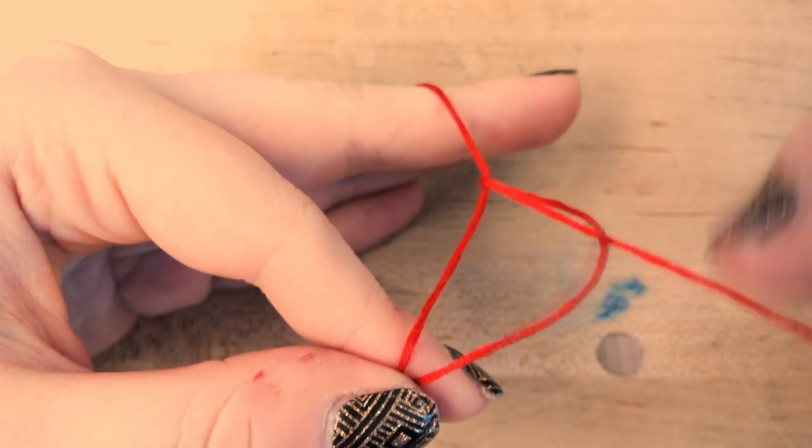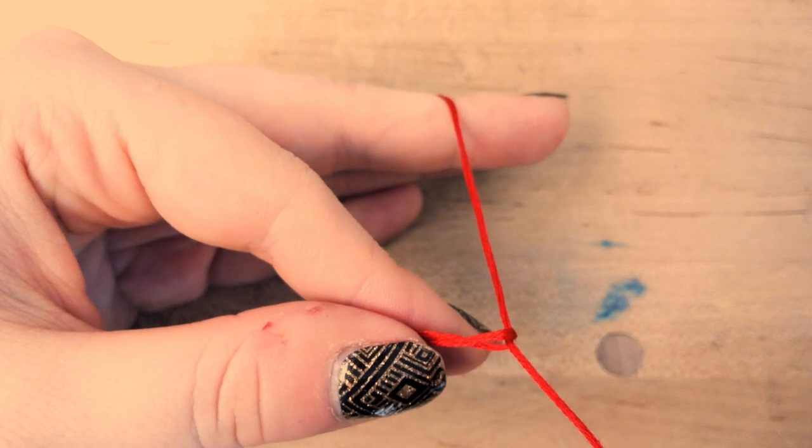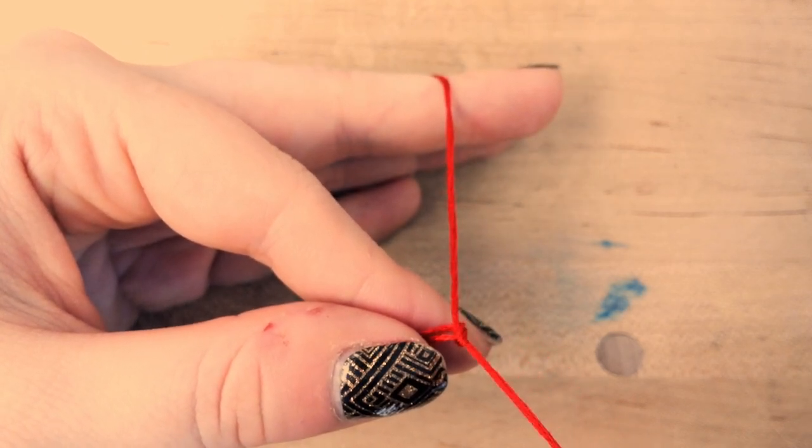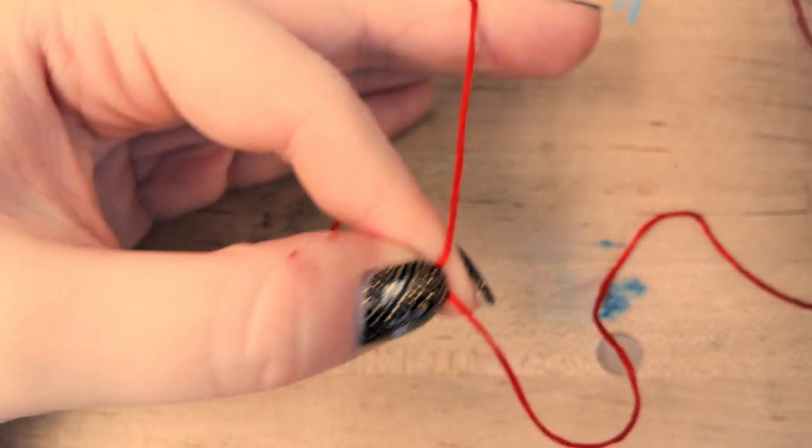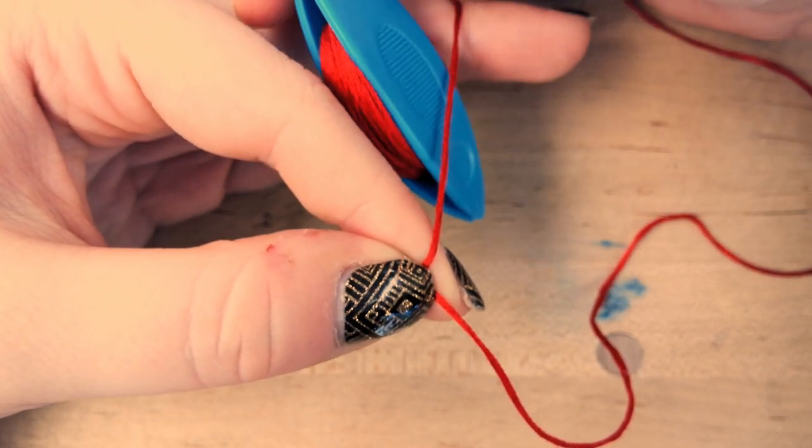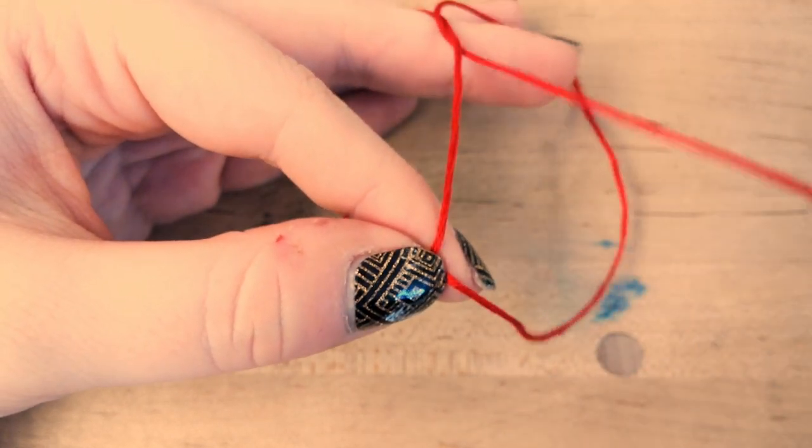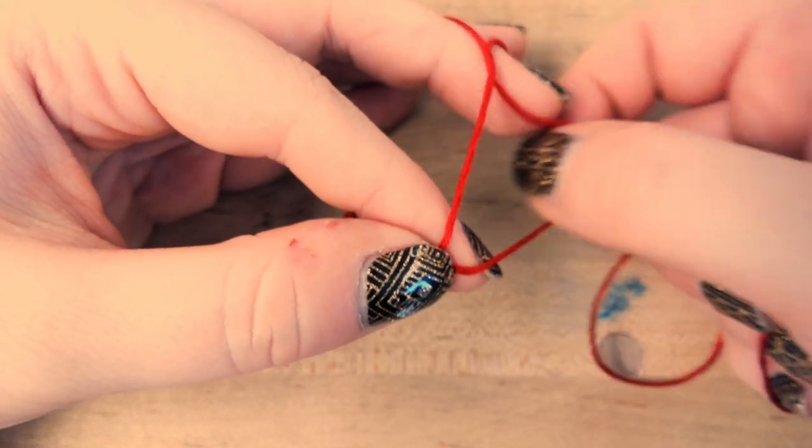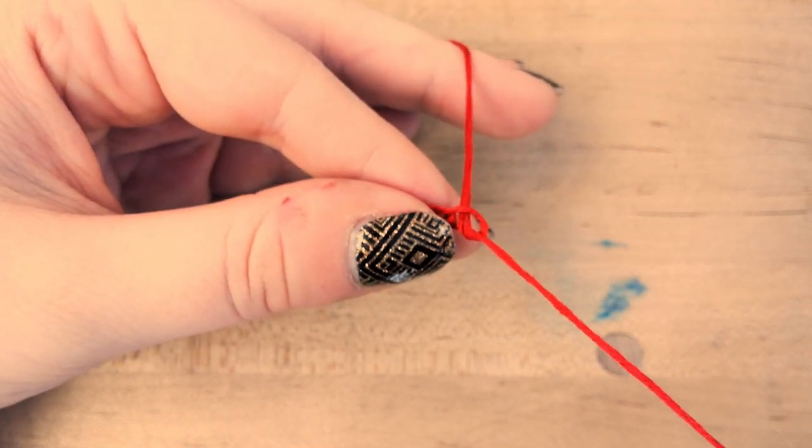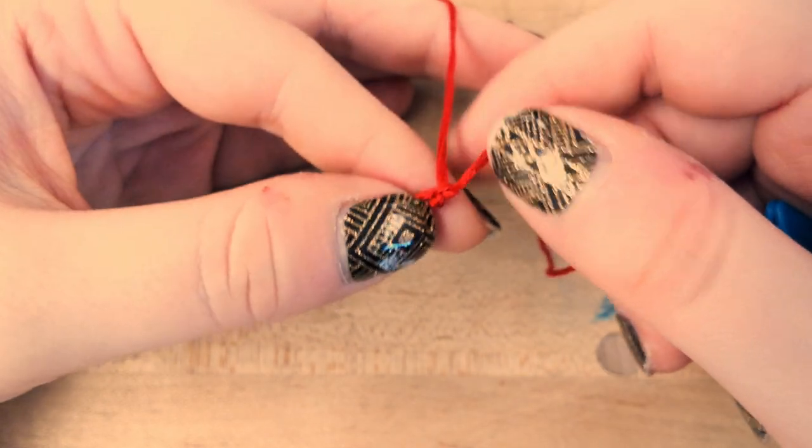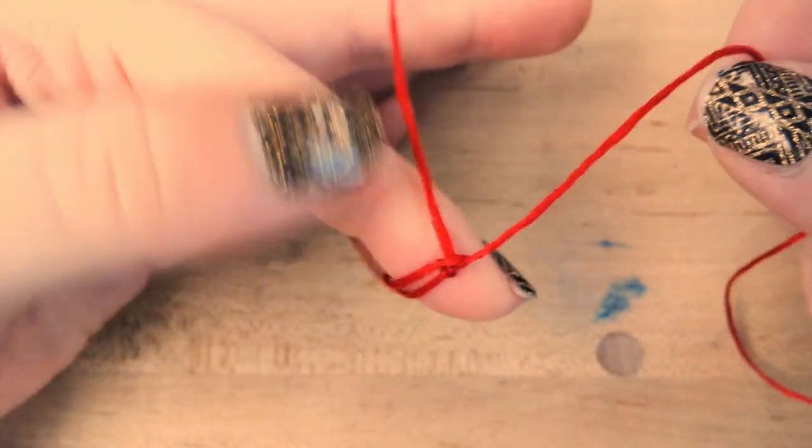Then I'm gonna just hold it here so it doesn't get away, I'm gonna do the second half of my knot by going from this side down in and pull it through. Then I need to flip that knot again, there it's going and there it goes. I'm gonna test it by sliding my loop and giving myself a little more room to work with.